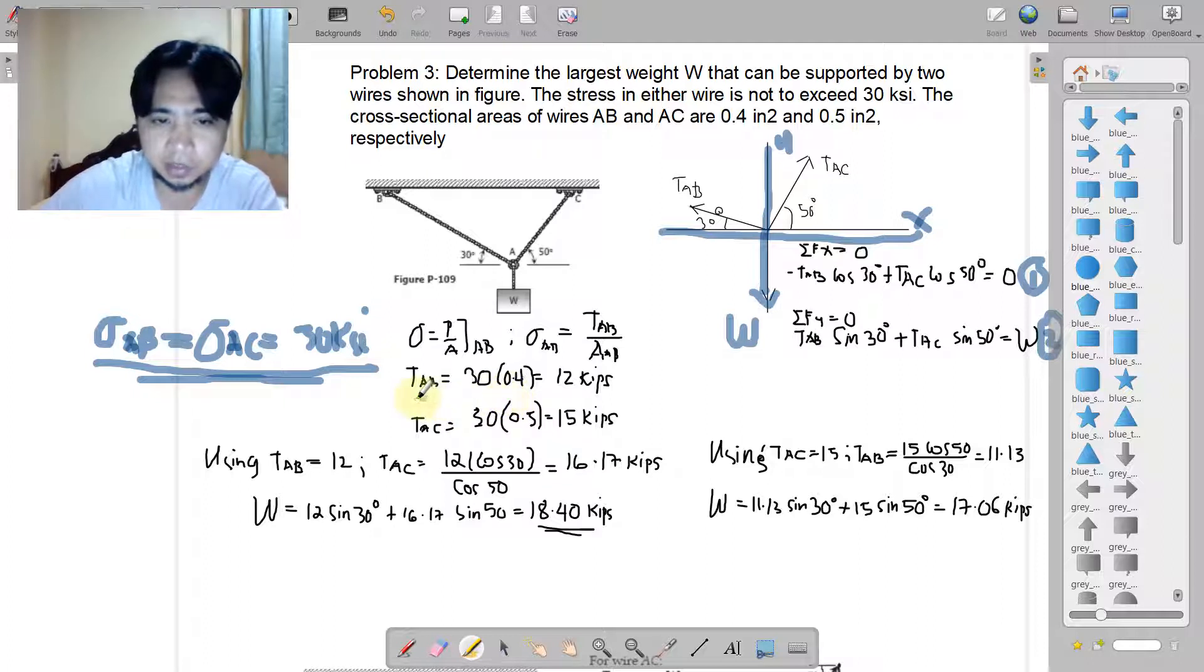Upon this limit, we will multiply this by its corresponding area. This is the base formula for AB: sigma AB equals tension at AB over area at AB. By cross multiplication, TAB equals sigma times area of AB. So sigma of AB is 30 times the area 0.4, we have 12 kips. Similarly, TAC - the same allowable times the area 0.5, we have 15 kips.